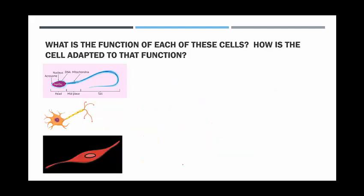So what I've got here are three different animal specialised cells. Can you please write down what the function is and how the cell is adapted to that function?